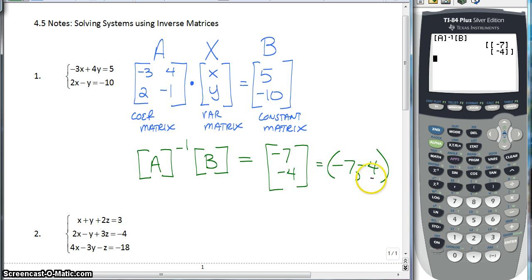And that is our answer. Negative 7, negative 4. That is the solution to our system. Of course, remember to write it as an ordered pair because it is an ordered pair because it's a system. It's not just a matrix. We actually are solving a system. We're just using matrices to solve.